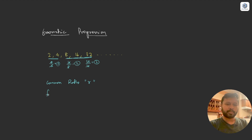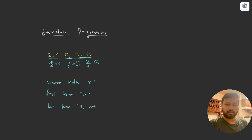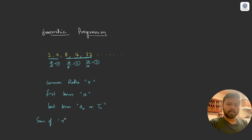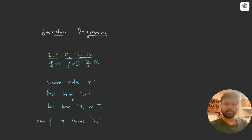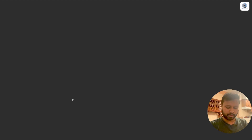The first term of a GP is denoted by a, and the last term is denoted by either aₙ or tₙ — it can be denoted by either of them. The sum of n terms is denoted by Sₙ. So these are the standard notations. It's pretty simple to identify a geometric progression — you just divide a number with the previous one and you should get a common ratio.